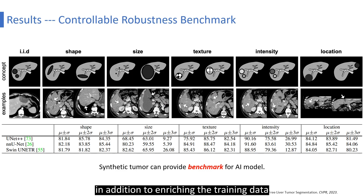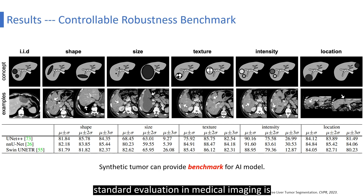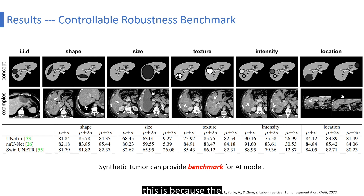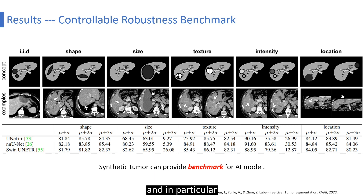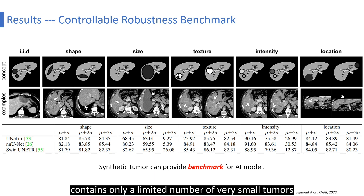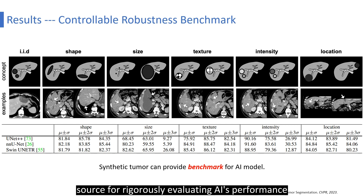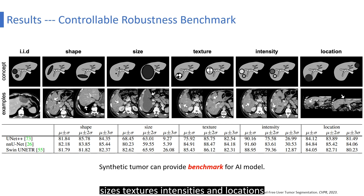In addition to enriching the training data, our synthesizing strategy also enables us to rigorously assess AI robustness. Standard evaluation in medical imaging is limited because the number of annotated tumors in existing test datasets is not big enough to be representative, and in particular contains only a limited number of very small tumors. We show that synthetic tumors can serve as an accessible and comprehensive source for rigorously evaluating AI performance in detecting tumors at a variety of different shapes, sizes, textures, intensities, and locations.